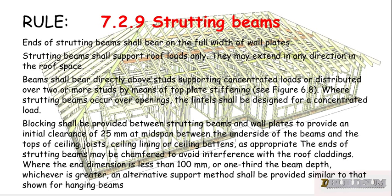Blocking shall be provided between struts and wall plates to provide an initial clearance of 25mm at mid-span between the underside of the beams and the tops of the ceiling joists, ceiling lining, or ceiling battens as appropriate. So 25mm initial clearance before loading — hopefully that means the deflection of the beam won't interfere with your ceiling line.